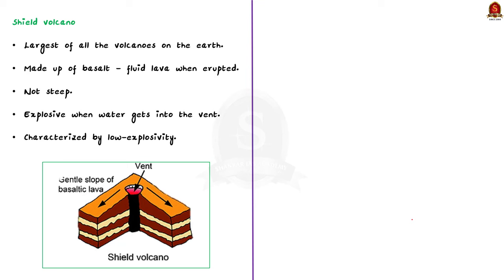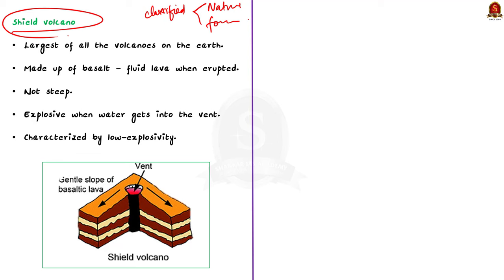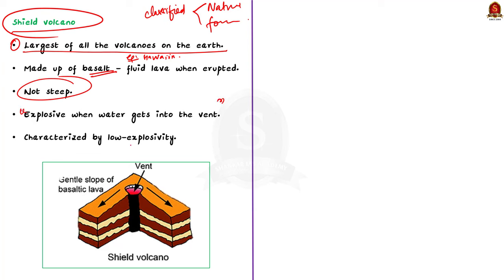Volcanoes are generally classified on the basis of the nature of eruption and the form developed on the surface. The first type is shield volcanoes. Shield volcanoes are the largest of all volcanoes on the earth. The Hawaiian volcanoes are the most famous shield volcanoes. These volcanoes are mostly made up of basalt, which is a type of lava that is very fluid when erupted. For this reason, these volcanoes are not steep. They become explosive if water gets into their vent. They are characterized by low explosivity. The upcoming lava moves and throws out a cone at the top of the vent, developing into a cinder zone.